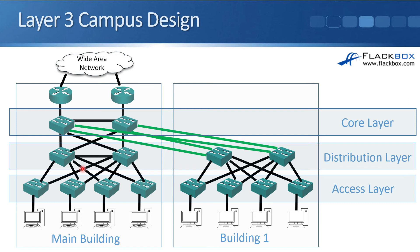When using layer 3 links everywhere you configure a routing protocol, and routing protocols support equal cost load balancing — so all your links remain available and traffic is load balanced across them. Routing protocols also converge and recover from failures a lot faster than spanning tree does.